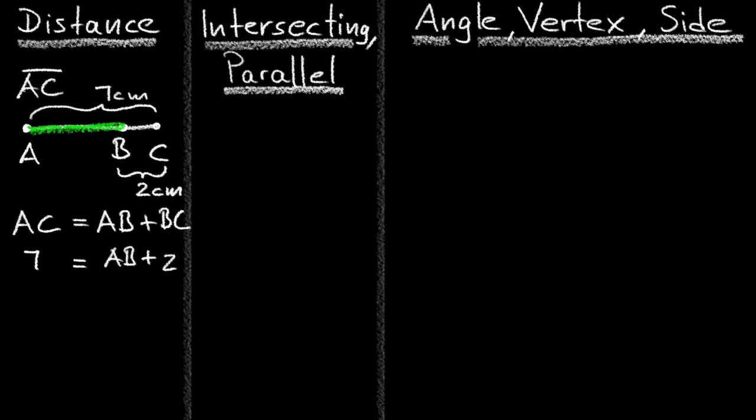And after subtracting 2 from both sides, we get 5 equals AB. So the distance AB is 5 cm. And we are done with this problem.